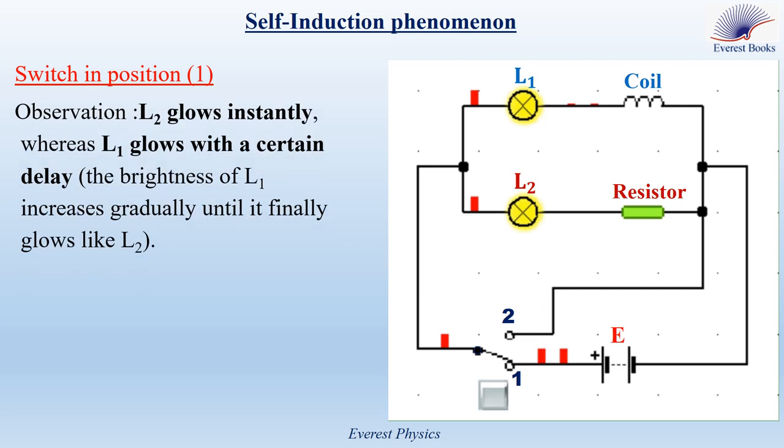We observe that L2 glows instantly, whereas L1 glows with a certain delay, or the brightness of L1 increases gradually until it finally glows like L2.